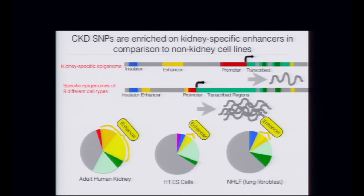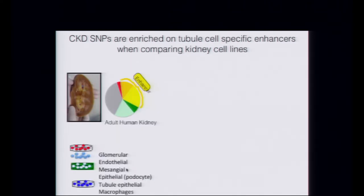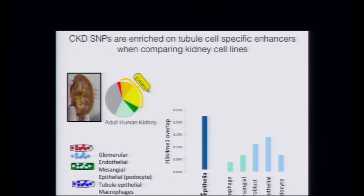We can do a little better than that because we now have multiple cell types derived from the kidney with maps for each. We can say this enrichment is not just somewhere in the kidney, but — with a grain of salt — we see enrichment in the tubular epithelium compared to other kidney cell types: glomerular epithelial cells, endothelial fibroblasts, and mesangial cells. The tubular epithelial cells seem to be where we see more clustering of these CKD-associated polymorphisms. That's very nice computationally, but we have to do the hard work — screen these enhancers and show they actually act as regulatory regions in the kidney.